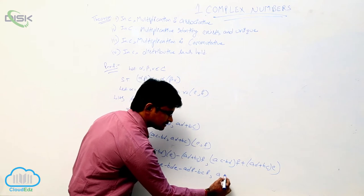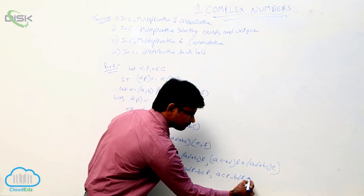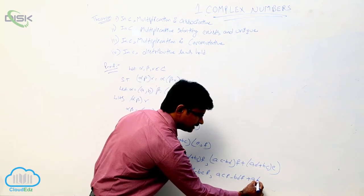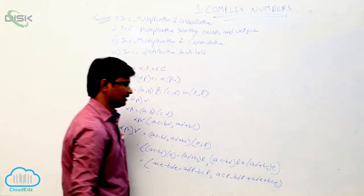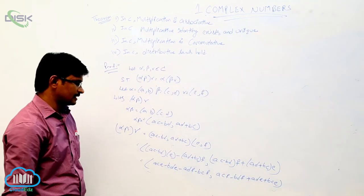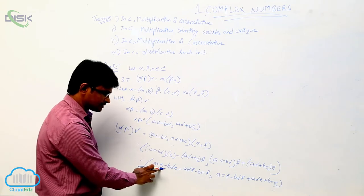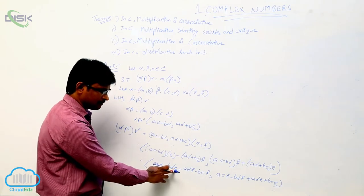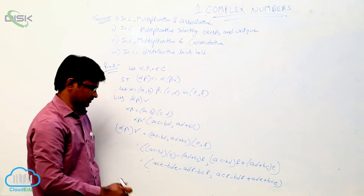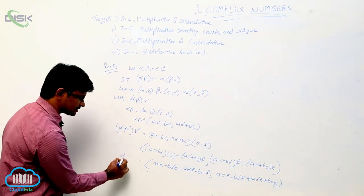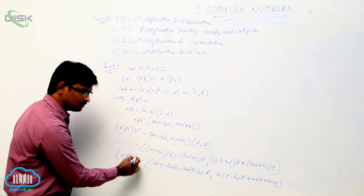Continuing the expansion: ace minus bde minus adf minus bcf, comma, acf plus ade plus bce minus bdf. There is no cancellation here. This is the value of the LHS: alpha beta into gamma.